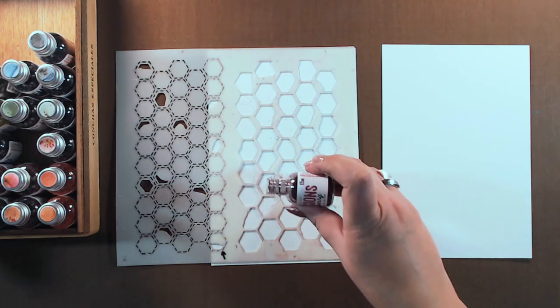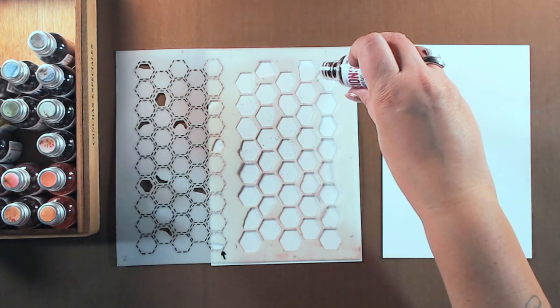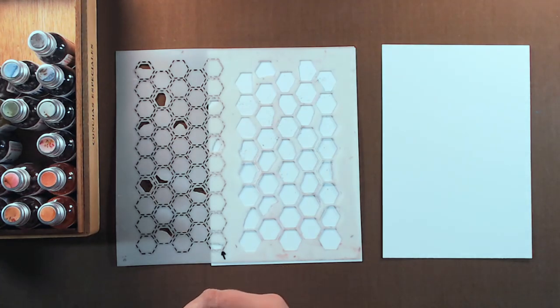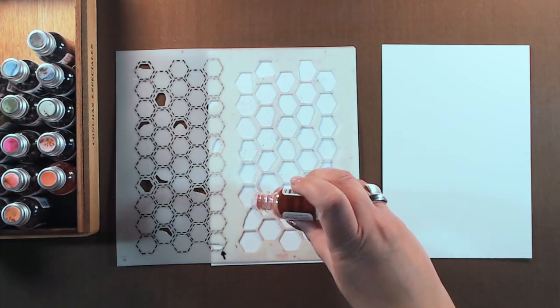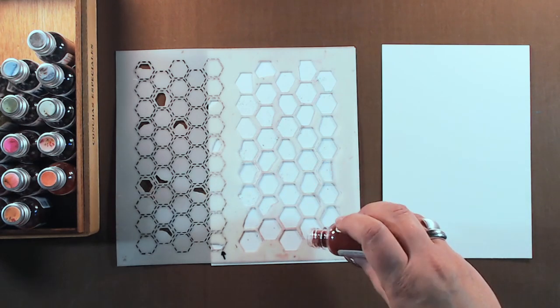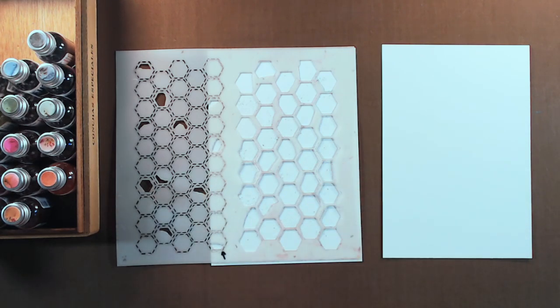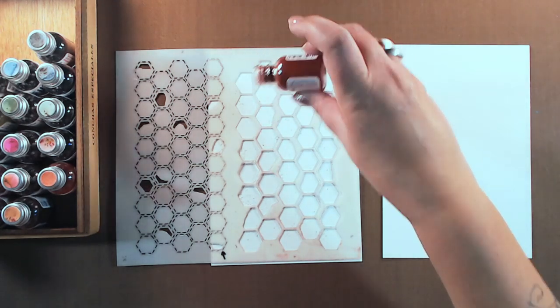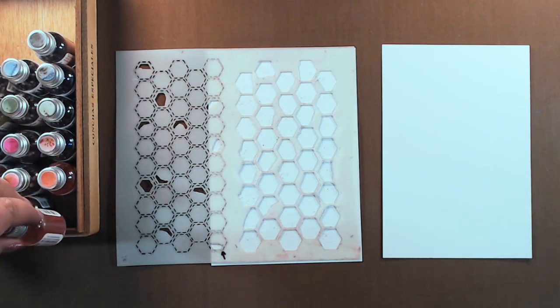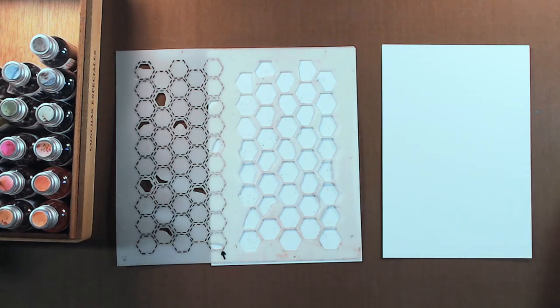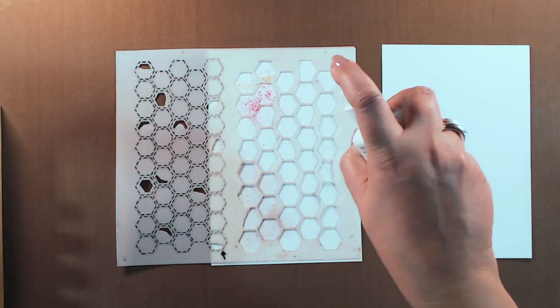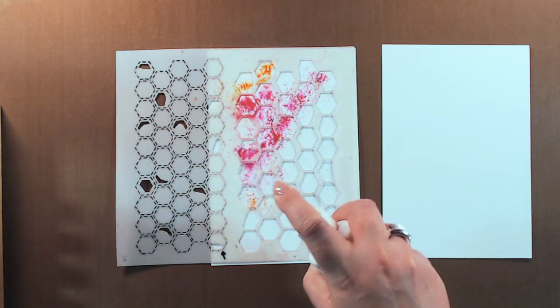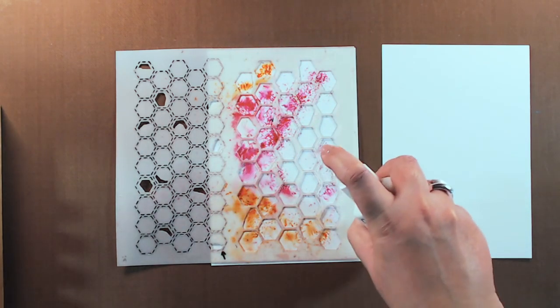I'm sprinkling a tiny bit of powder over the stencil, sticking within colors from the same family. Because they have a brown undertone, if I mix warm and cold colors I'll end up with mud, so I'm keeping with warm colors for now. Then to activate the color, I'm just spraying water over the whole thing.